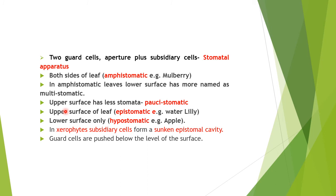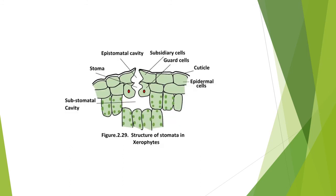Leaves can have more stomata on the lower surface — called multistomatic — or fewer on the upper surface — called paracytic. When stomata are only on the upper surface, they are called epistomatic, as in water lily. When only on the lower surface — hypostomatic, as in apple. In xerophytes, subsidiary cells form a sunken epistomatal cavity, with guard cells pushed below the level of the surface. This is called sunken stomata — an adaptive, water-conservative nature in xerophytes.